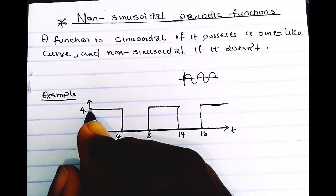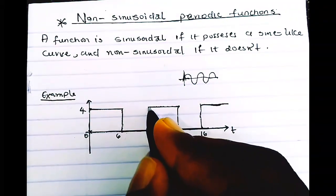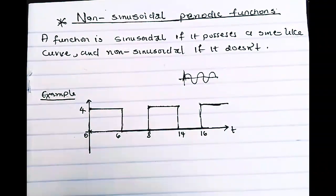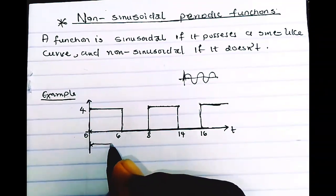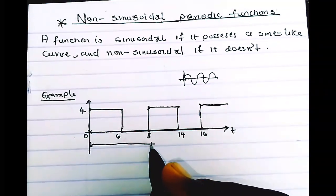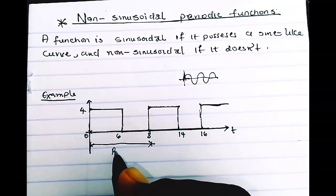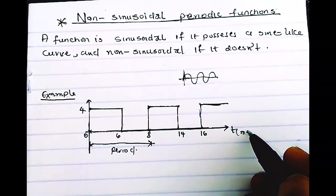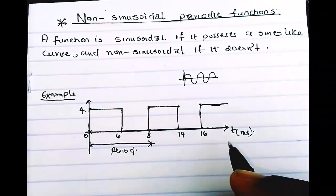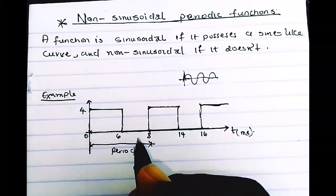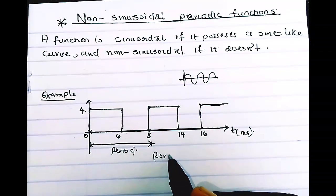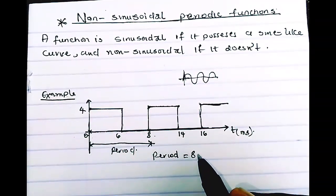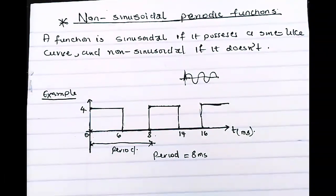You can say it starts from here and moves, and starts from here again, and starts from here again. The space between two starting points I call my period. For example, this graph is plotted against milliseconds, so my period — the space from zero to eight — is equal to eight milliseconds.